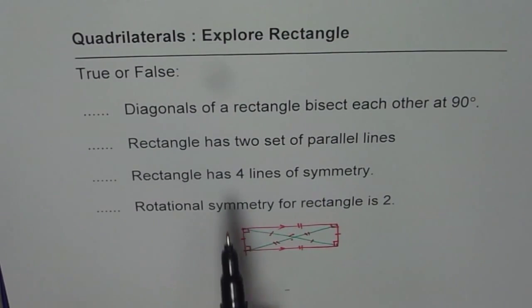Second, rectangle has two set of parallel lines. True or false? Rectangle has four lines of symmetry. True or false? Rotational symmetry for rectangle is two. So I would like you to pause the video and answer these questions.